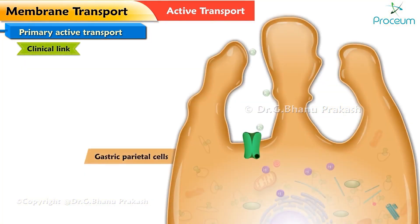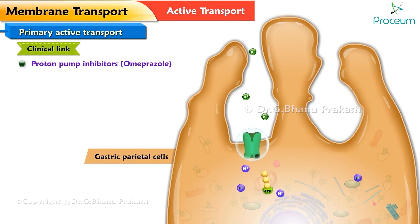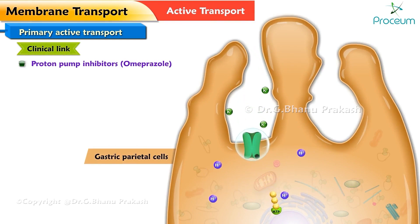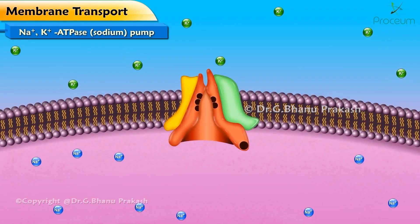You may wonder how these are related in a clinical setting. A proton pump inhibitor such as omeprazole inhibits H+/K+ ATPase proton pumps in gastric parietal cells. It is used to treat peptic ulcers by reducing the acidic content of the stomach and allows for the healing of the damaged mucosa.